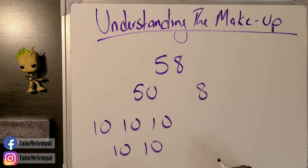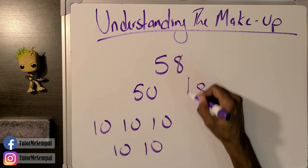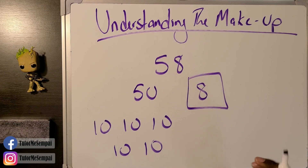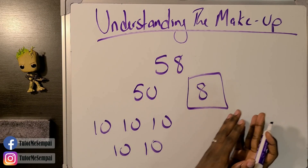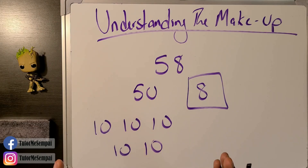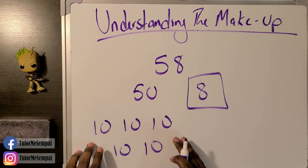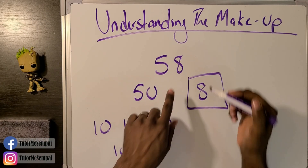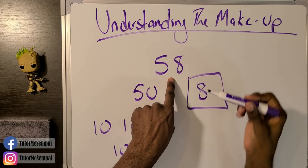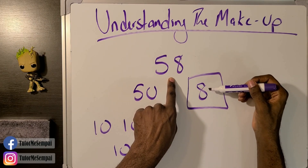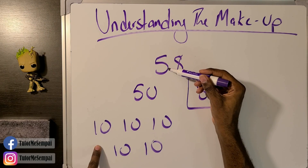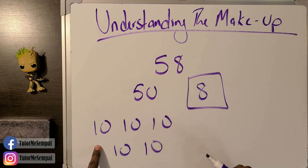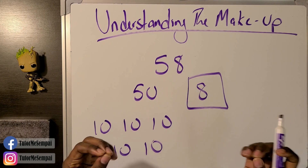So we have eight ones and five tens. Putting both together, 58 means we have eight ones and five tens. That's how we break down the place values within a number.